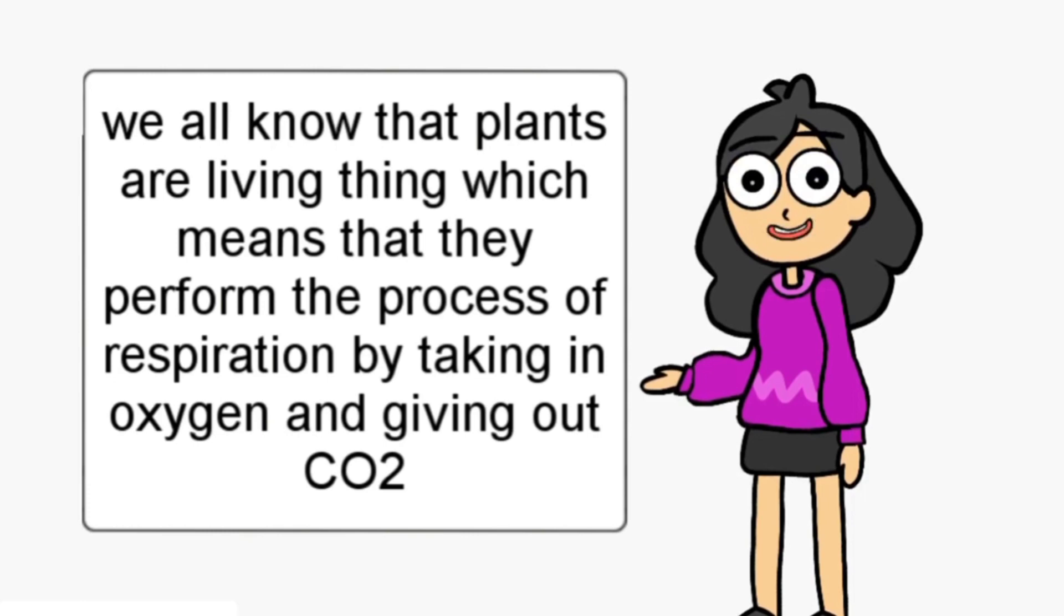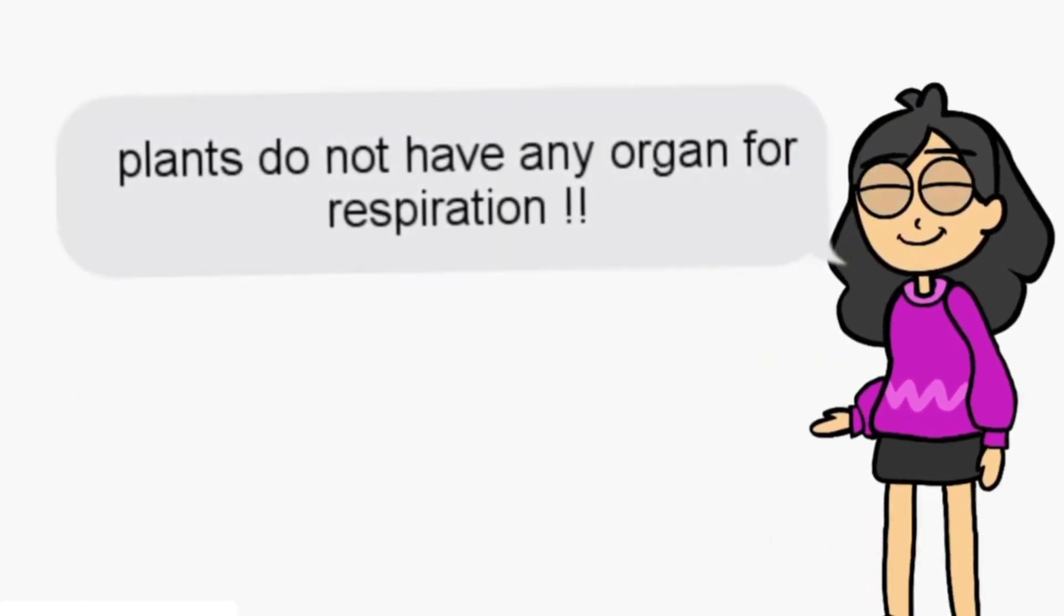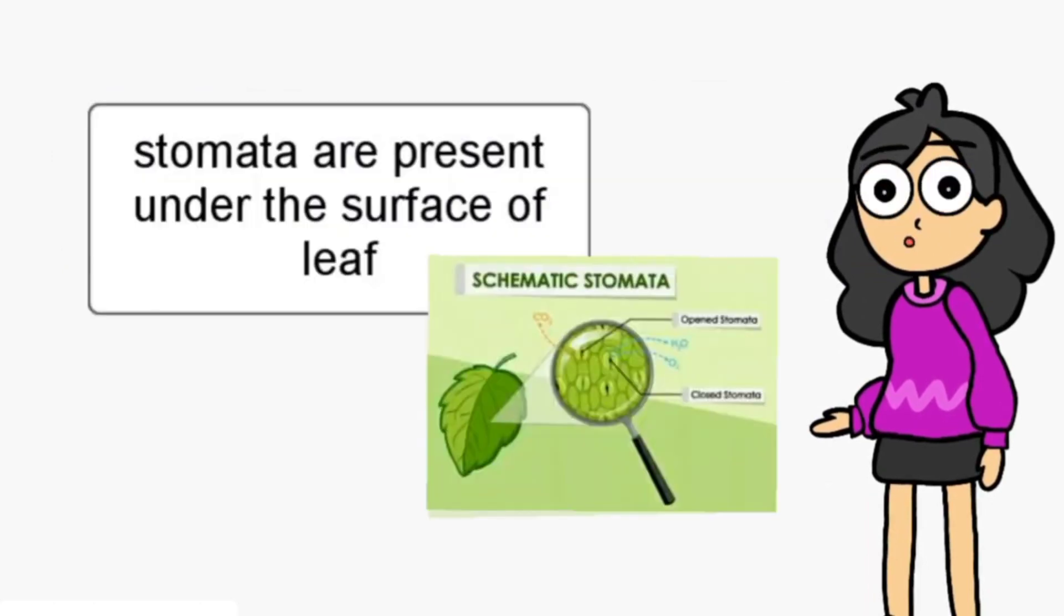Plants do not have any organs for breathing. The exchange of oxygen and carbon dioxide in plants takes place through small pores called stomata. These stomata are present under the surface of leaves.